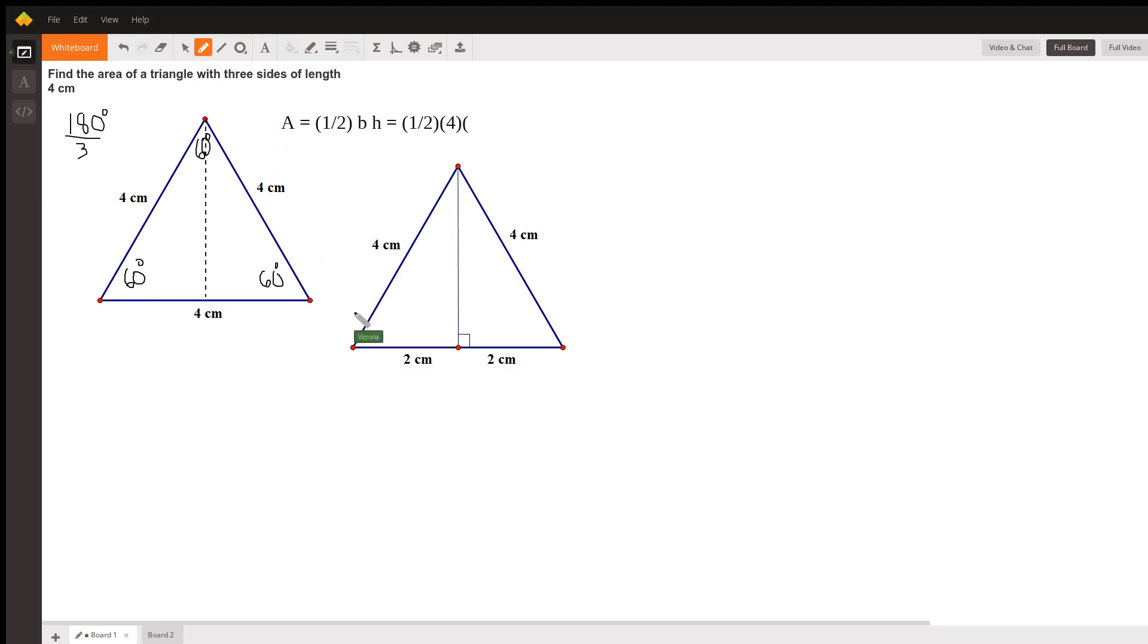Now, this is still 60, and this is still 60 degrees, but we've cut this top angle into two 30-degree angles, because we cut it right in half.